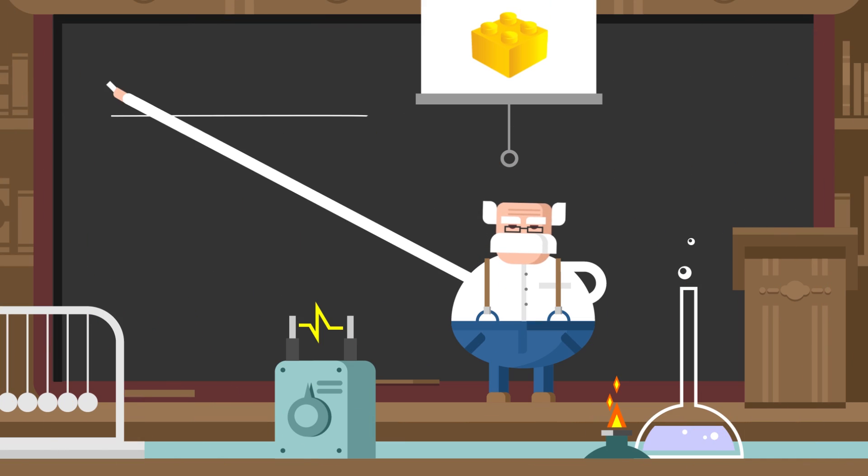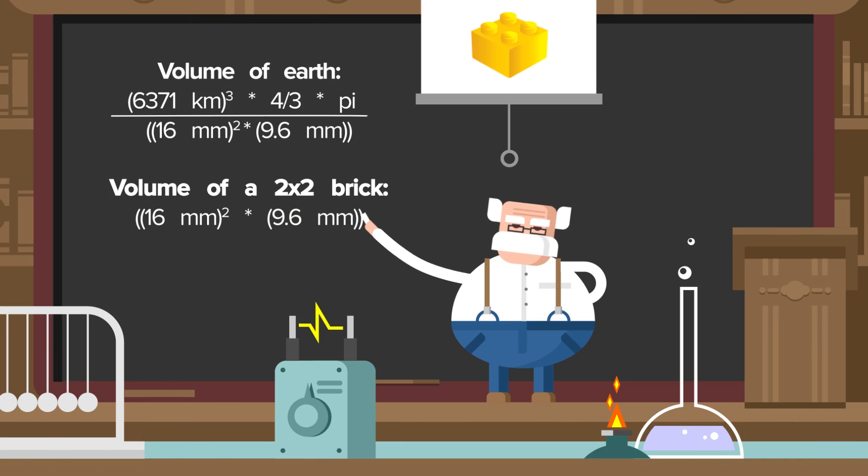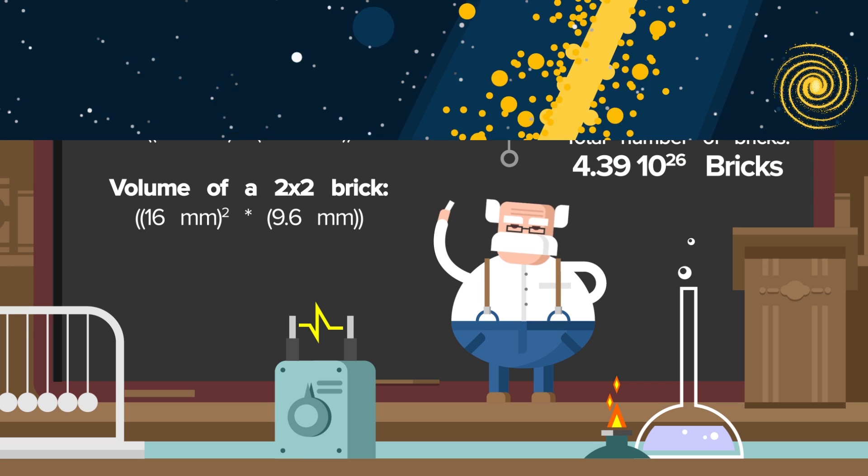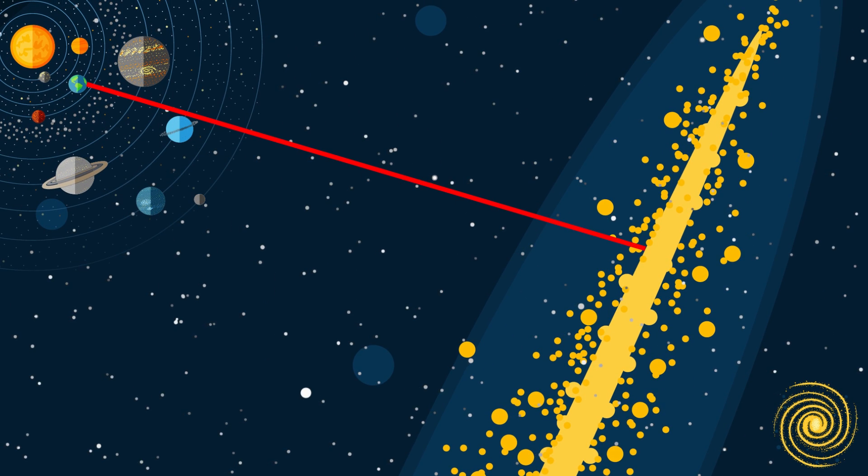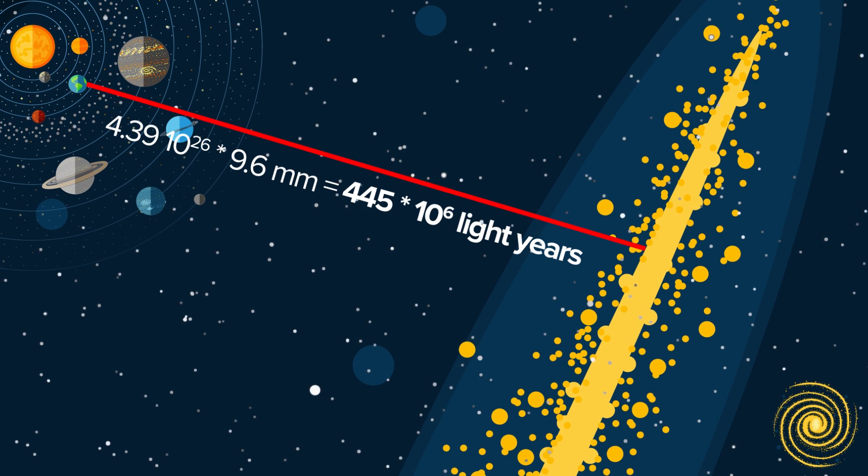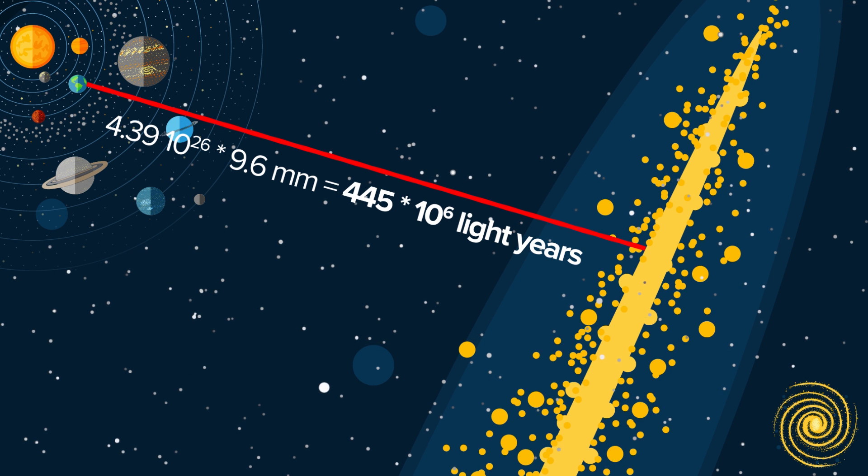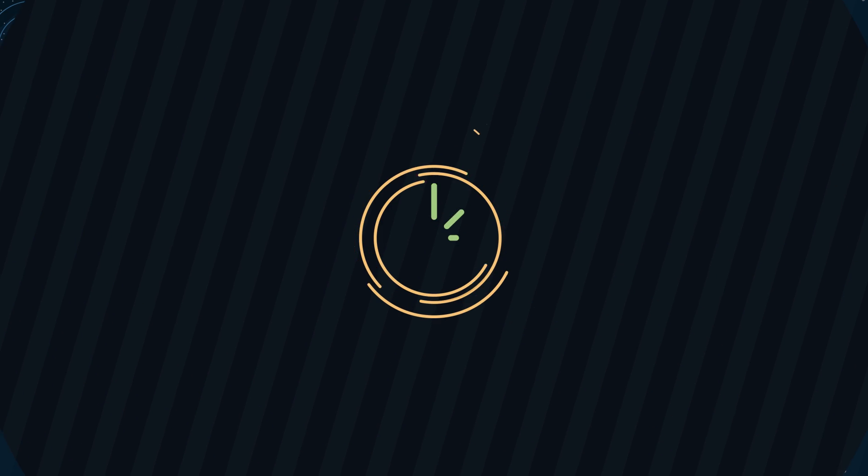To give you a sense of how big a project this is, we would need over 100 quintillion Lego bricks. Stacked end-to-end, these Lego bricks would make a tower 400 million light-years tall, which, if it were on Earth, would extend across the entire Laniakea supercluster of galaxies where our Milky Way lives.